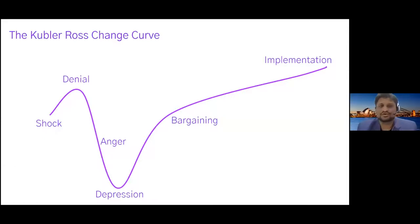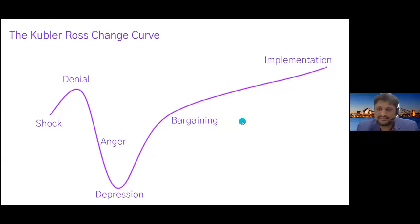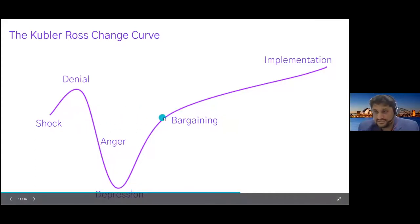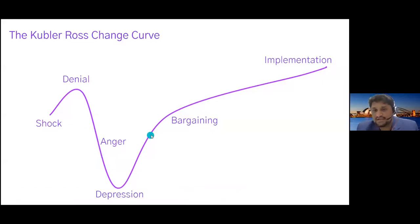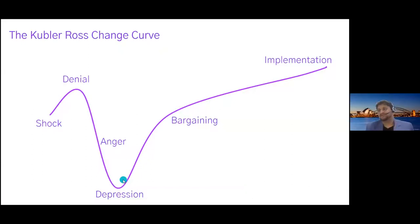Once you pass that, you go into the anger stage, which is where you start slipping into what's called the valley of despair. The valley of despair is a very important part — somewhere around here is where you find a balance. A lot of people have issues here nowadays, personally and professionally — they slip into this curve and just stay there.